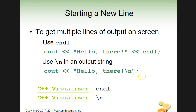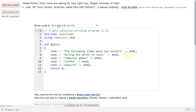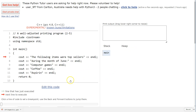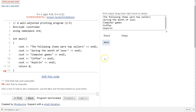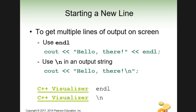The second way uses an escape sequence: backslash-n — not forward slash, backslash. That's our newline operator. It's inserted inside the quotes as part of the string itself, for example: cout << "Hello there\n". It does the same thing as endl — drops the cursor to the next line. Let's open an example where I added endl to each statement, and stepping through, each item now prints on its own line.